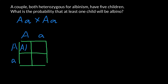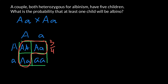Filling in the Punnett square: we get capital A capital A, capital A small a, capital A small a, and small a small a. As you can see, three quarters of the progeny would have a normal phenotype — so three quarters — and according to our Punnett square, one quarter of the progeny is expected to be affected.